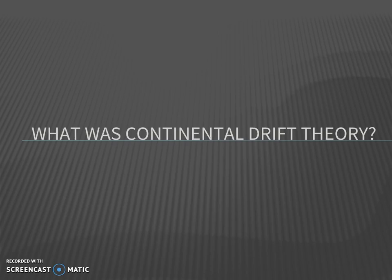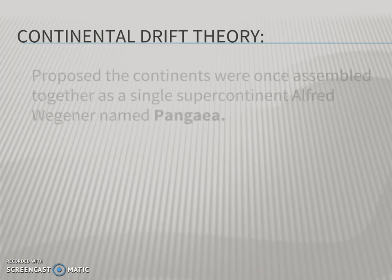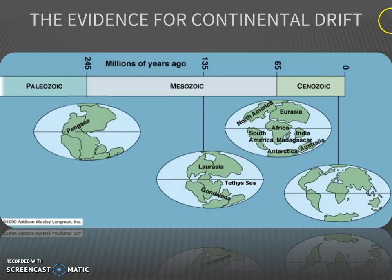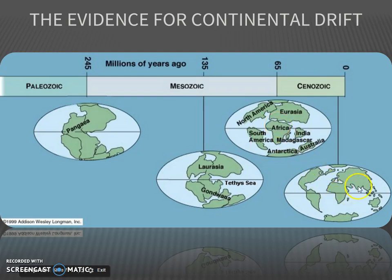What was continental drift theory? It was a theory that proposed the continents were once assembled together as a single supercontinent that Alfred Wegener named Pangaea. His theory proposes that long ago all the land masses on Earth were together in this formation, and then through time the continents moved to their current position.